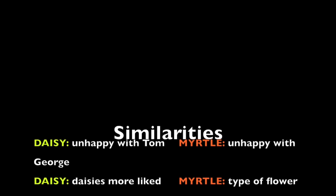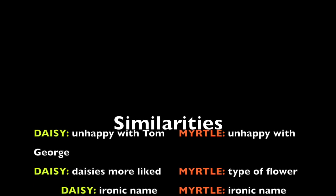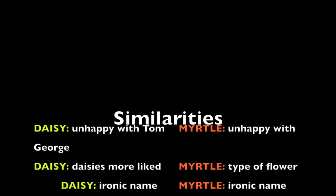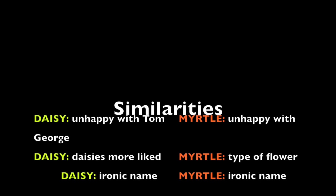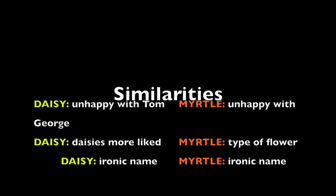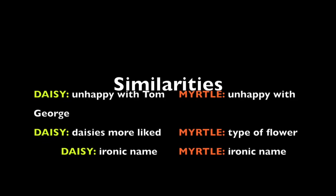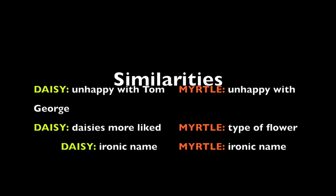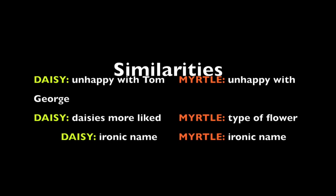She sees Gatsby and instills false hope in him that the two of them may actually be together, because she is so used to her terrible life. Myrtle has grown tired of George and believes he is a burnout. She craves power and money, and ignores the love that George can offer her in favor of Tom's resources.